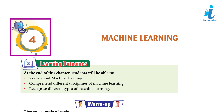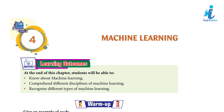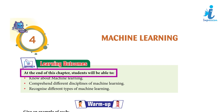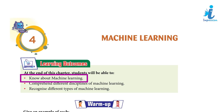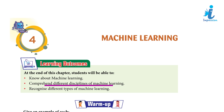Chapter 4: Machine Learning. Learning Outcomes: At the end of this chapter, students will be able to know about Machine Learning, comprehend different disciplines of Machine Learning, and recognize different types of Machine Learning.